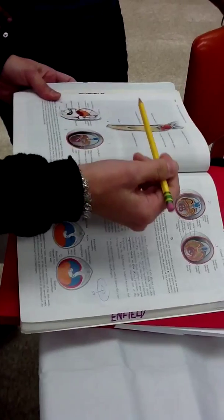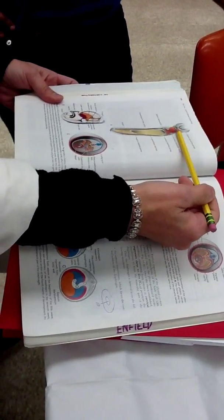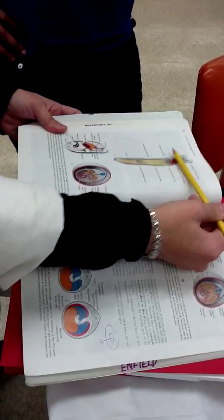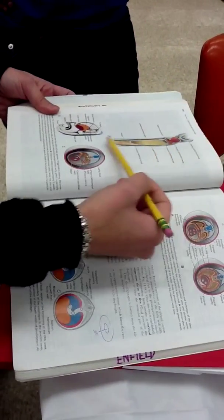So this septum transversum that's going to ultimately form the central tendon of the diaphragm, this is splitting the cavity, the body cavity, into a thoracic and peritoneal, the abdominal pelvic and peritoneal cavity.